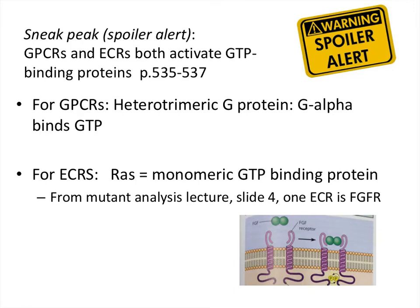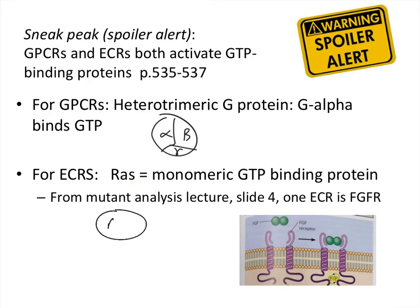Here's the key distinction. For GPCRs, we've already talked about how their G-protein is a heterotrimer with alpha, beta, and gamma subunits. The part of this heterotrimer that binds to GTP is G-alpha. For enzyme-coupled receptors, these are also GTP-binding proteins, but instead there's a monomer, and it's just called RAS. Since there's only one part, that's the part that binds GTP.